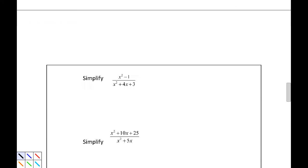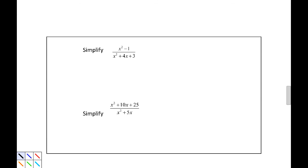For our next example, we have simplify. And our numerator is x squared minus 1 with our denominator of x squared plus 4x plus 3. The numerator, just like in the last one, factors as a difference of squares to be parentheses x plus 1, close parentheses, open parentheses x minus 1, close parentheses.